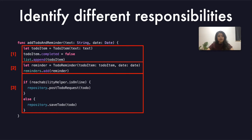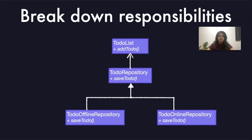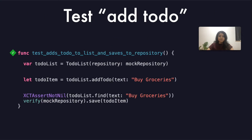If this method had one outcome only, it would be so much easier to test. Let's go ahead and break down these responsibilities. The code is broken down into a standard structure: the sole purpose of to-do list would be to manipulate to-do items in the list, and the to-do repository would be responsible for saving to-dos. The to-do repository is a protocol, and the implementation will be selected based on network availability. When we test our new method, the test is very clear and specifies what is expected. It almost reads like a sentence.